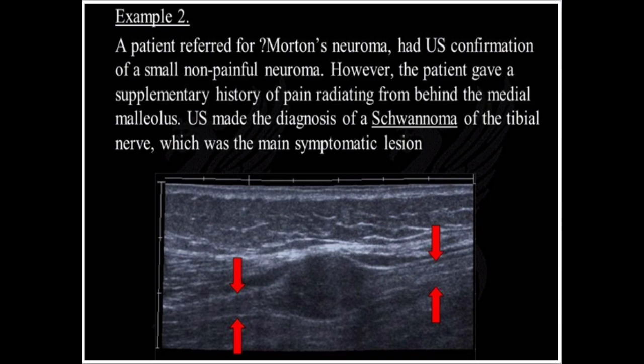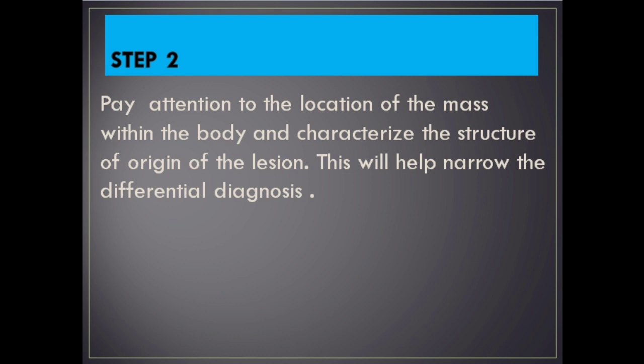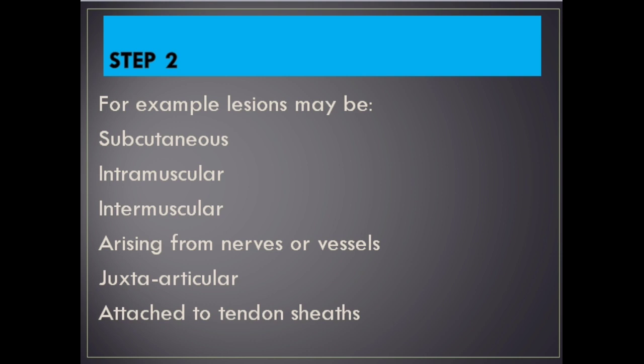Step 2. Pay attention to the location of the mass within the body and characterize the structure of origin of the lesion. This will help narrow the differential diagnosis. For example, lesions may be subcutaneous, intramuscular, arising from nerves or vessels, juxta-articular, or attached to tendon sheaths.